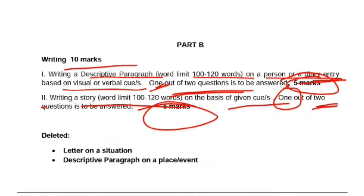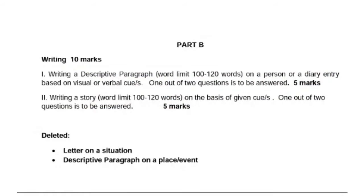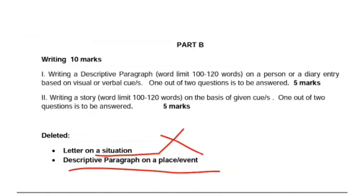That covers your writing topic. Previously, letter writing was also asked — a situation would be given and you had to write a letter on it. But now letter writing has been removed. Similarly, for descriptive paragraph, four topics were previously asked: person, diary entry, place, and event. But now descriptive paragraphs will no longer be asked based on place and event. That was your writing section.